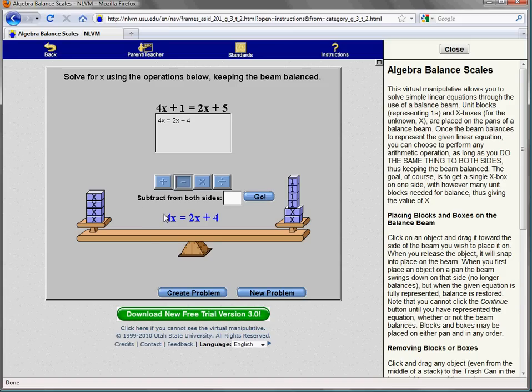Keep in mind my goal is to get one of the x blocks by itself on one side of the scale. And I notice that I have got 4 on the left and 2 on the right. So I can get rid of these 2 on the right keeping in mind that whatever I do happens to both sides. So if I take away again with the minus button 2 x's.